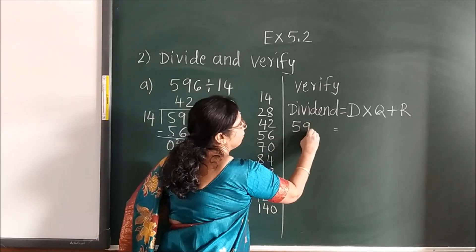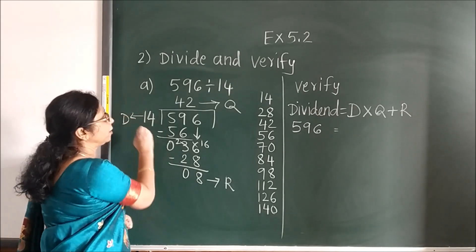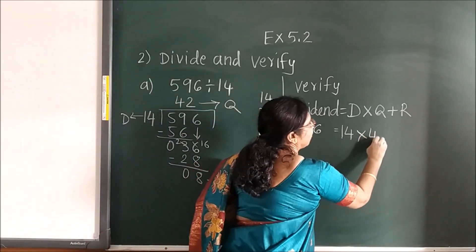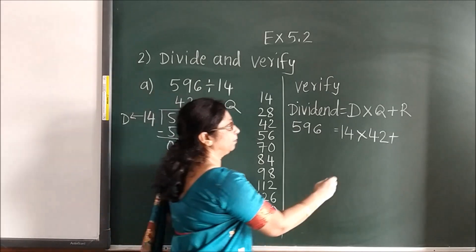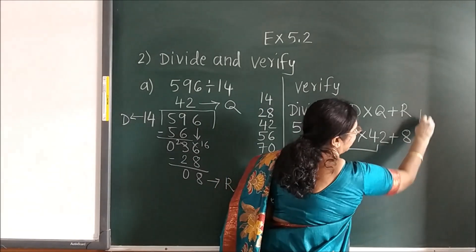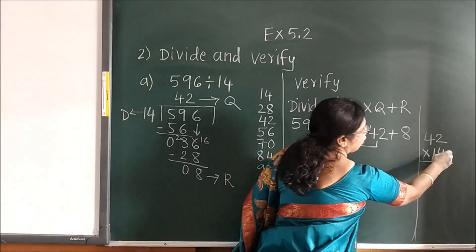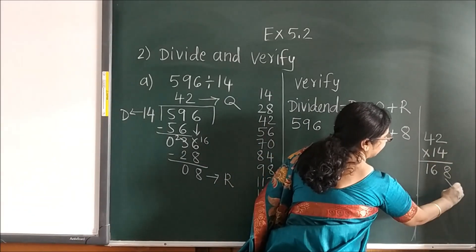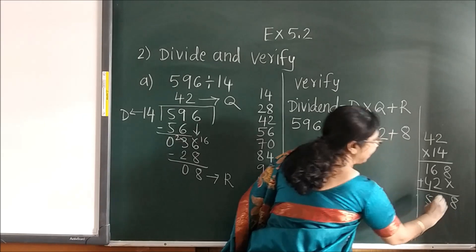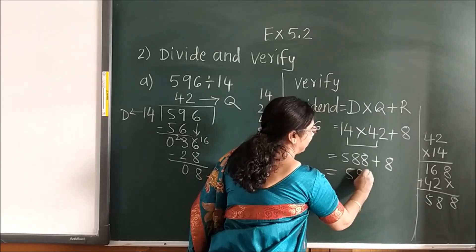In the last exercise we saw how to verify: dividend equals divisor into quotient plus remainder. Divisor is 14, quotient is 42, remainder is 8. Multiply 14 by 42: 2 twos are 4, 4 fours are 16. Then 1 two is 2, 1 four is 4. When you add: 5, 8, 8. Then 588 plus 8 equals 596. That means LHS is equal to RHS.